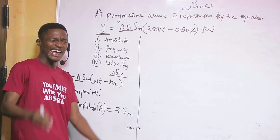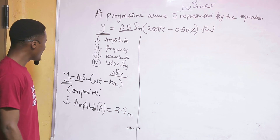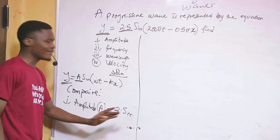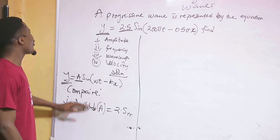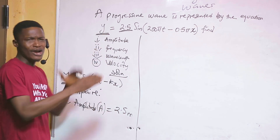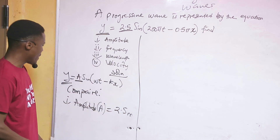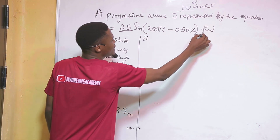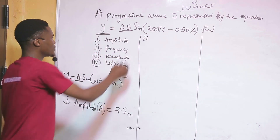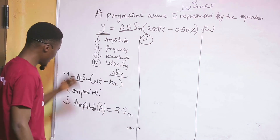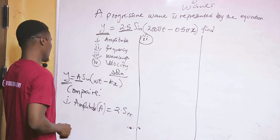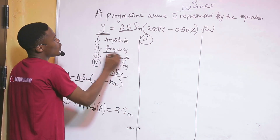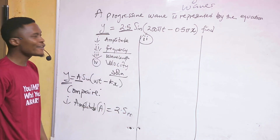As you can see, the amplitude is 2.5 — we didn't have to solve anything, all we had to do was compare. Now let's move to the second question: finding the frequency.